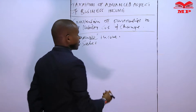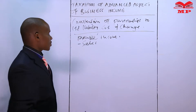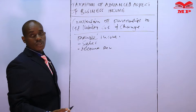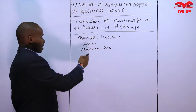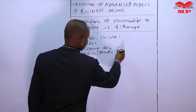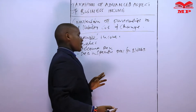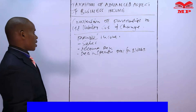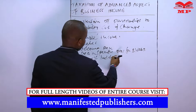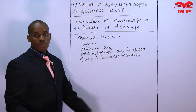Taxable incomes include sales made by the partnership — if they are buying and selling goods, those sales are subjected to tax. Discount received is also taxable. A decrease in the specific provision for bad debts is treated as taxable income. Specific bad debts recovered should also be subjected to tax.